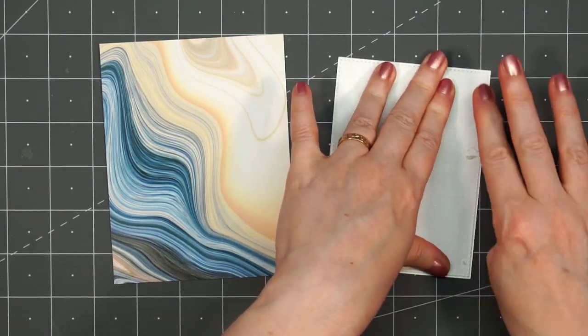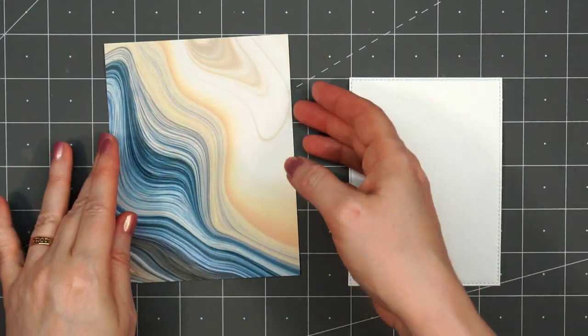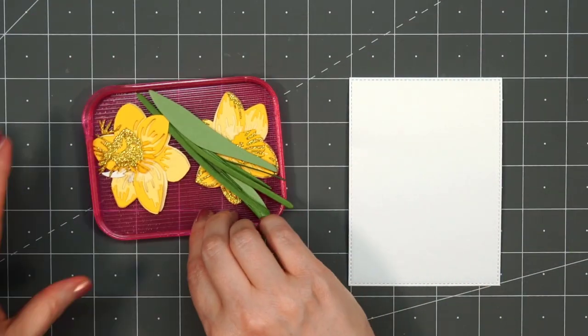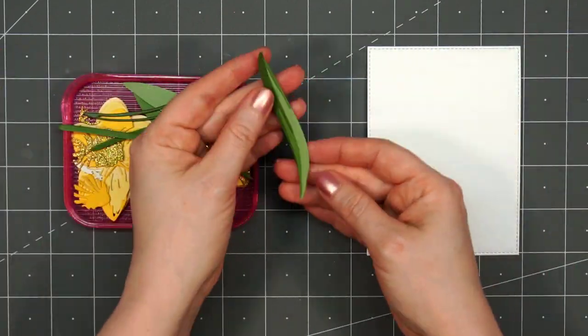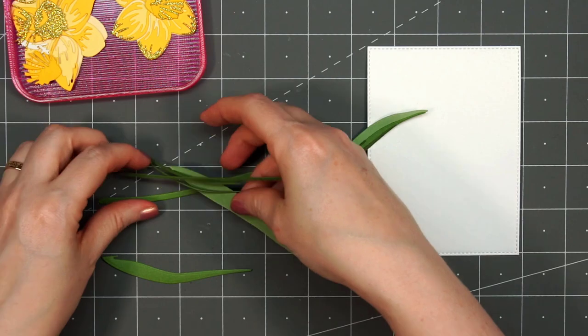I also have a stitched rectangle die cut in white and I used some shimmer cardstock for that. I started adding ATG tape to the back and remembered I don't want any adhesive on there quite yet.